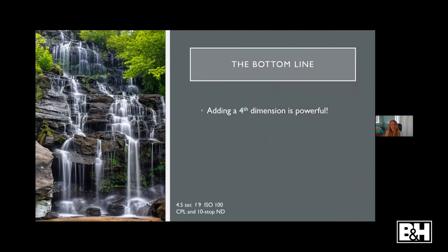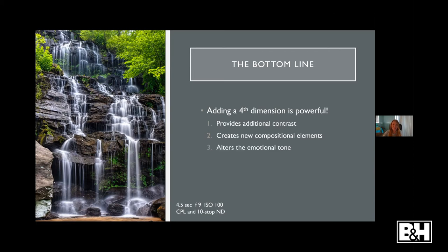To wrap up: adding a fourth dimension — time — to your image can be really powerful. It provides contrast between the smooth water and other textured elements like rocks or mountains. It creates new compositional elements, whether that's the leading line of traffic, streaking clouds, or the flow of water — introducing elements you can't unlock otherwise. It allows you to alter the emotional tone so you can bring forth your own artistic vision of what that landscape should look like. And my favorite: it lets the viewer time travel through your photo, and that's just cool.